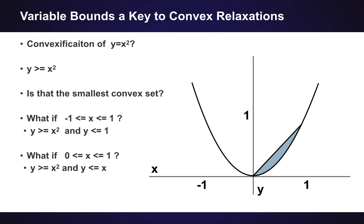What if we knew that x was between zero and one? Now we can say this is bounded by y is less than or equal to x, and we've shrunk the feasible set by a huge amount. What you're doing here is not only adding the constraints that x is between those bounds, but also deriving a new constraint on y based on those bounds on x. We're jointly thinking about the constraint y equals x squared and the additional constraints on the bound of x, and seeing what is the smallest convex region we could define.